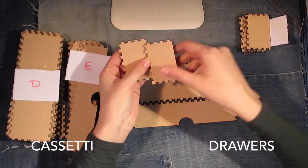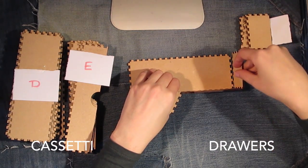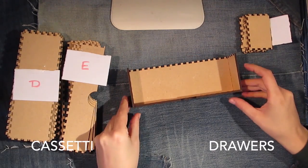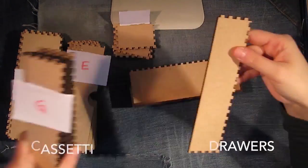Two panels F which are the sides of the drawer and a panel G which is the back.